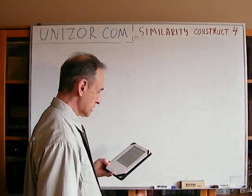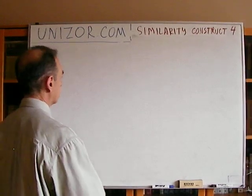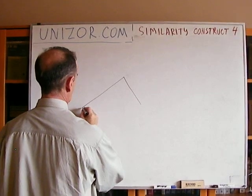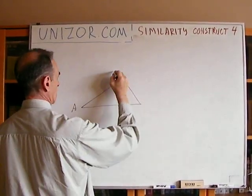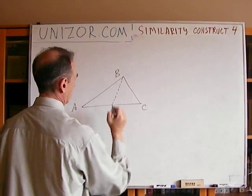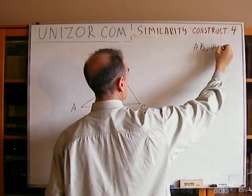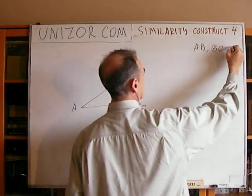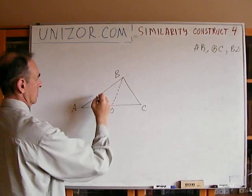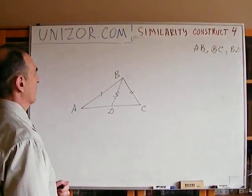Construct a triangle given two sides and an angle bisector between them. So you have a triangle and an angle bisector. You know AB, BC, and BG — these three sides.